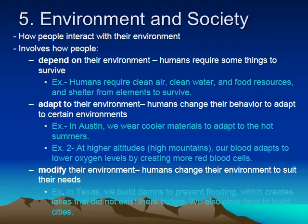The fifth element is environment and society. After learning about physical systems and human systems, this element specifically talks about how they interact together — how people interact with their surroundings. There are three aspects: how people depend on, adapt to, and modify their environment. Humans require things to survive — clean air, clean water, food resources, and shelter. Since we depend on the environment, we also adapt to it, often changing our behavior. For example, in Austin we wear cooler materials to adapt to hot summers.